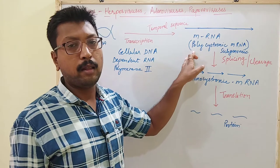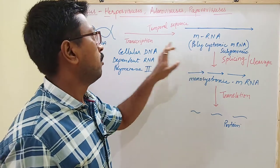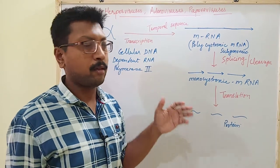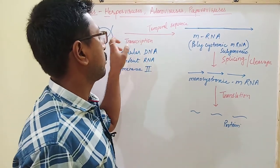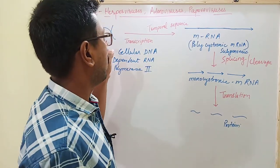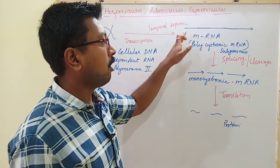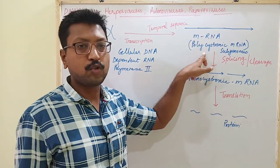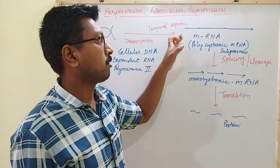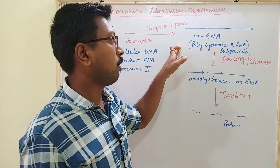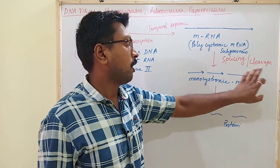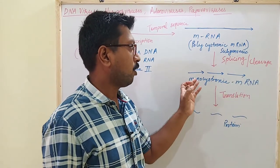The DNA is converted into mRNA, and subsequently many more transcriptions take place. The genes are expressed in a temporal sequence, and many mRNAs are formed. All these mRNAs are polycistronic subgenomic mRNAs, which then undergo splicing and cleavage.